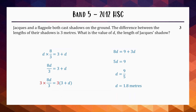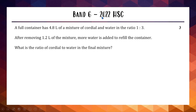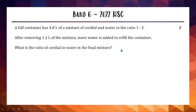Last question, from the 2022 HSC — likely Band 5 or 6. We have 4.8 liters of mixture with a cordial-to-water ratio of 1 to 3. We remove 1.2 liters of the mixture, then add 1.2 liters of water to bring it back to 4.8 liters. We need the final cordial-to-water ratio. After removing 1.2 liters, we have 3.6 liters of mixture remaining.